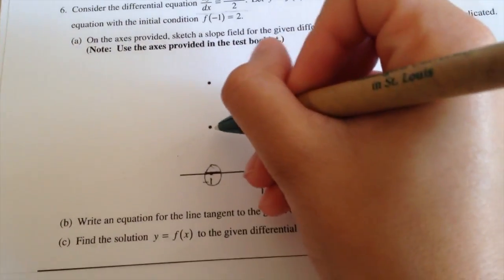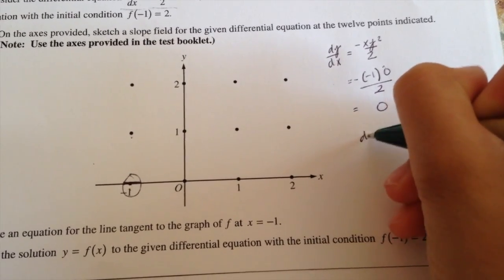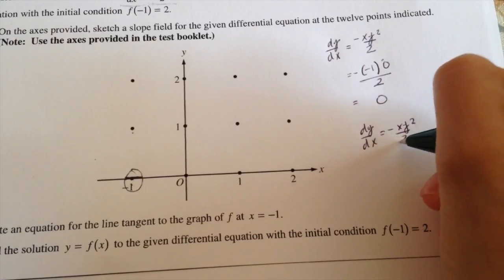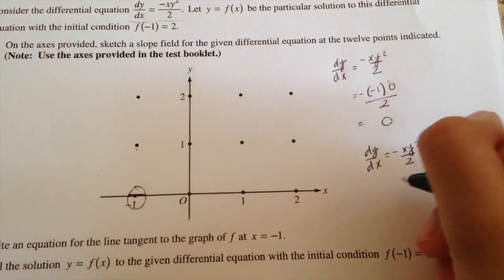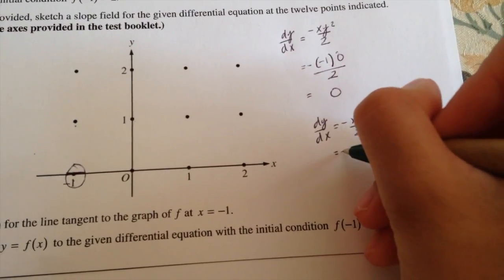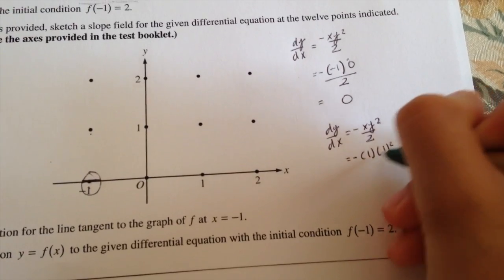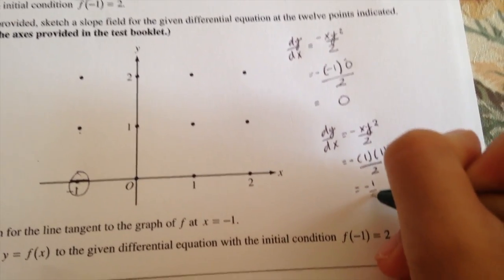Now for the second point, do the same thing using the same equation. dy over dx equals negative xy squared over 2. And then you just plug in the values which is negative 1, 1. So that would be negative times 1 times 1 squared over 2. That would go total negative 1 over 2.